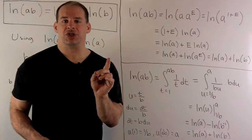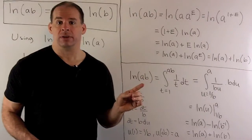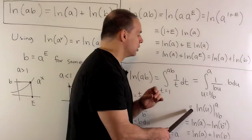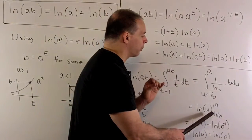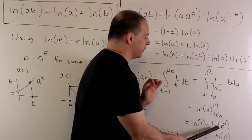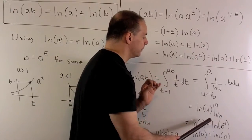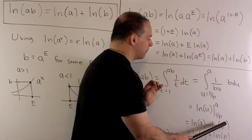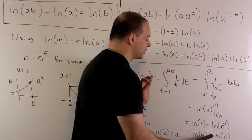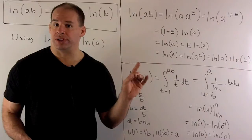By definition, we can use natural log of x as an antiderivative, so I'm using the first fundamental theorem of calculus here. I have natural log of u evaluated from one over b to a. Now one over b is b to the minus one, so evaluating and taking the difference gives natural log of a minus natural log of b to the minus one. Using our first property, I bring the minus one in front to give a plus, and that's my second property using the definition.